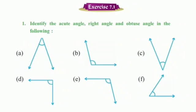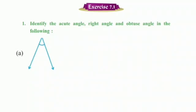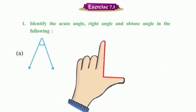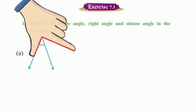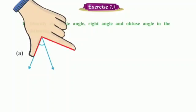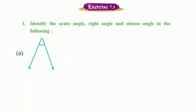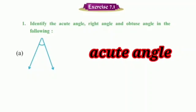Dear students, in first question of exercise 7.1, we have to identify the type of angles. Let us solve its part A. We will identify the angles using our hand in 90 degree position. Look students, the given angle is interior to the right angle. Which means, it is smaller than 90 degree. So, it is an acute angle.